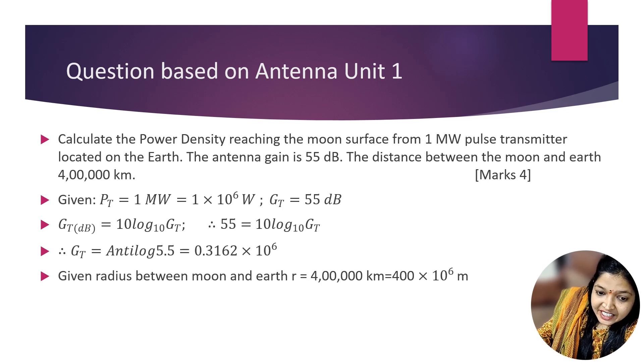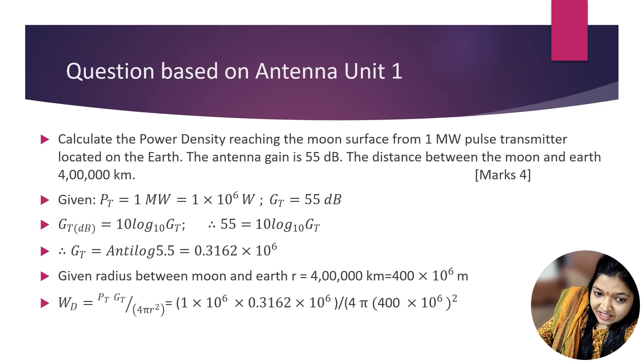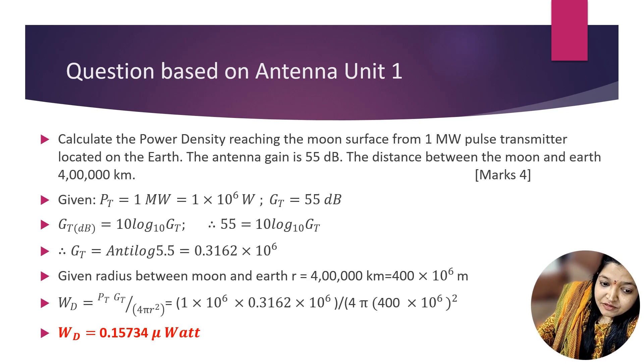The radius is given; we have to convert km into meters because we are taking normal values. The power density formula is WD = (PT × GT)/(4πr²).